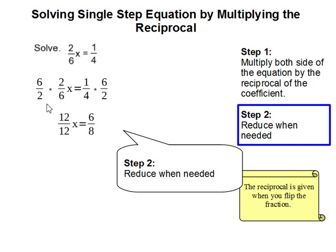And as you see, when you multiply the reciprocal, we will get the same number both on top and at the bottom. And they will cancel out, leaving x by itself.